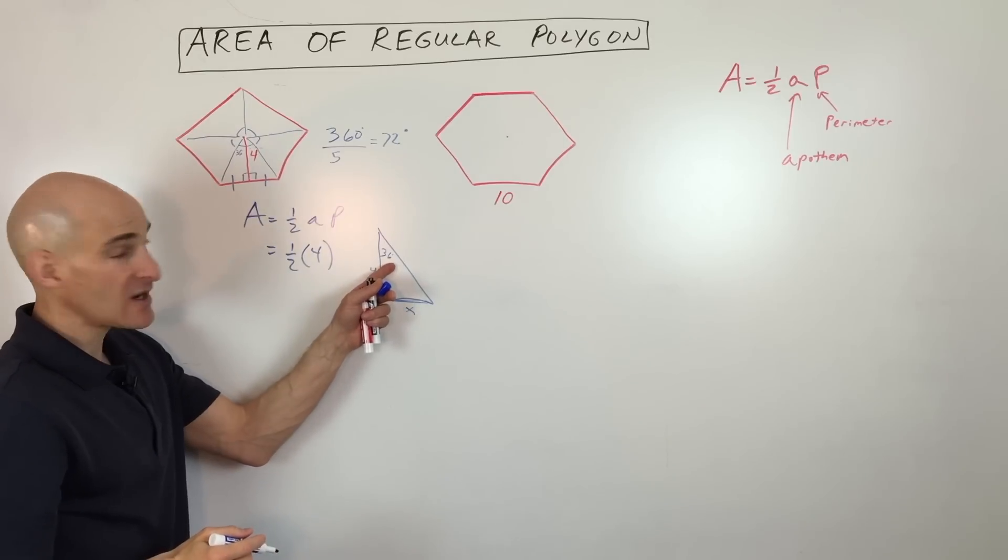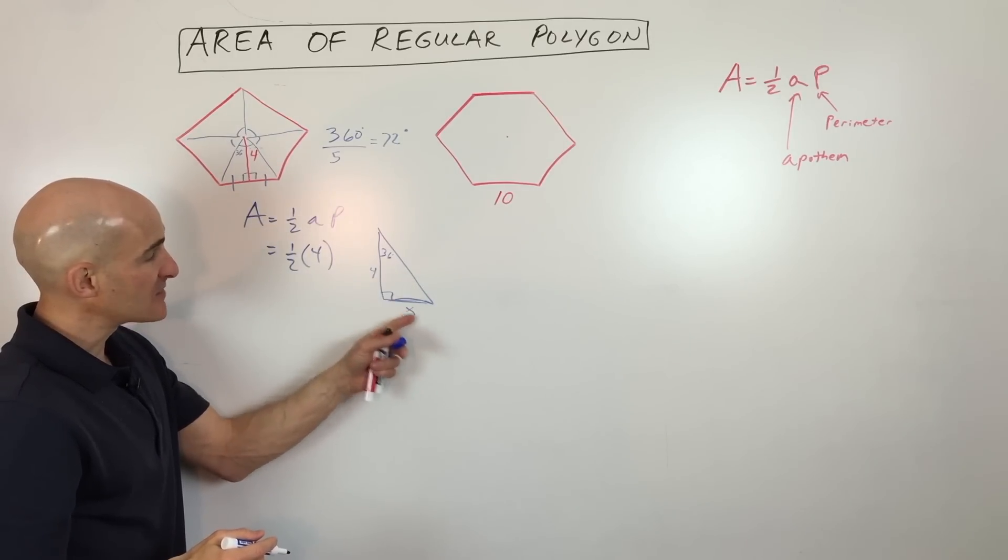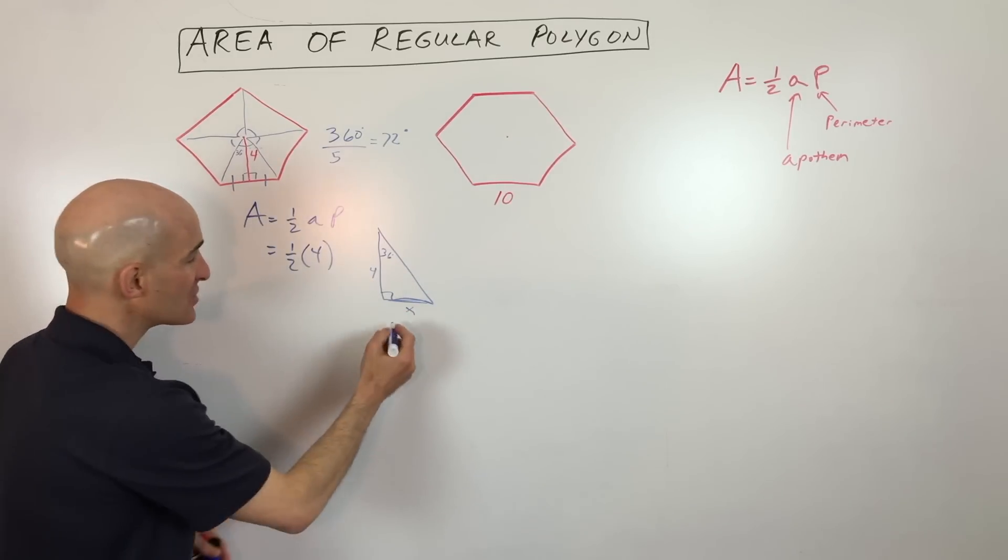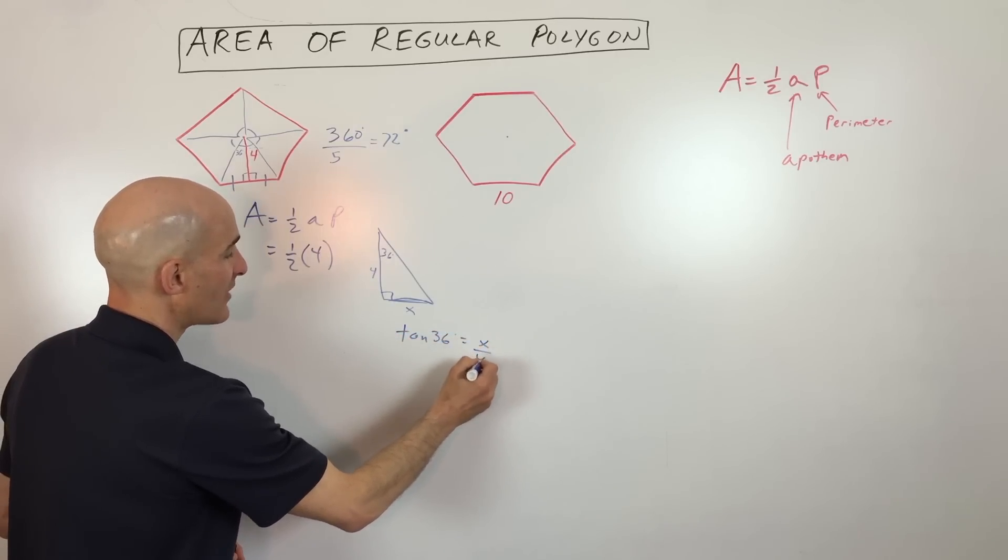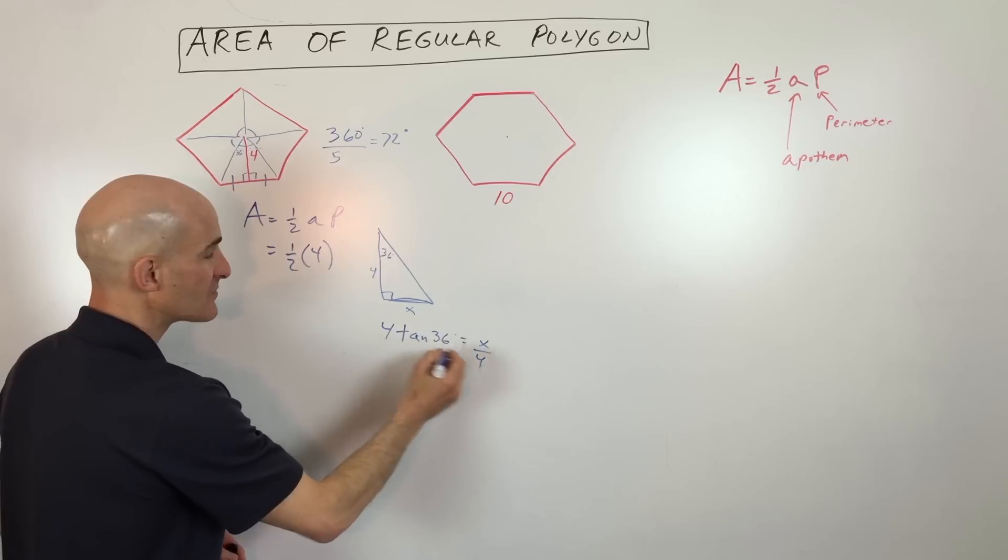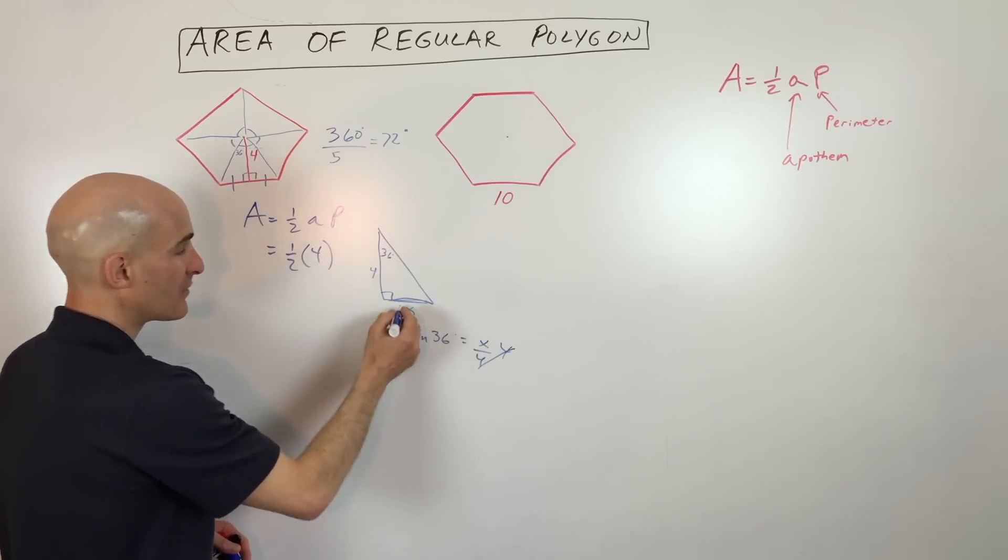So we're going to use some trigonometry. The opposite over adjacent is the tangent, so we've got the tangent of 36 degrees equals x divided by four, and if we multiply both sides by four, we get the length of this side.